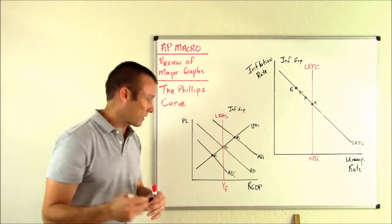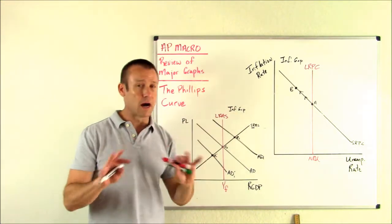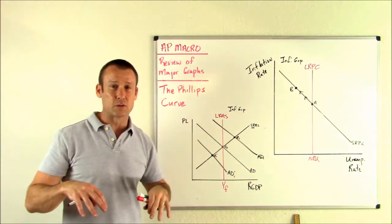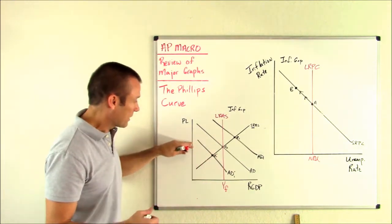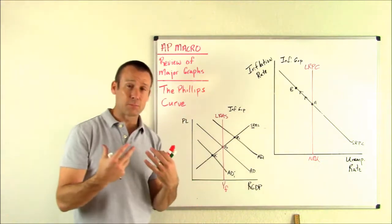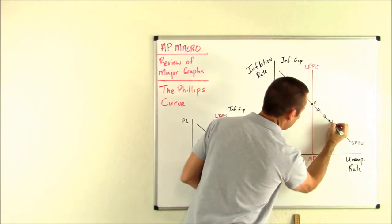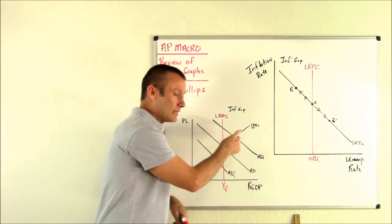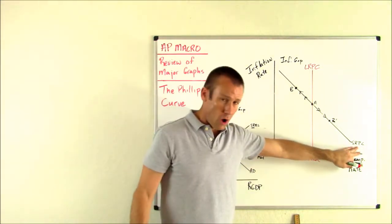Let's talk about the negative aggregate demand shock — AD shifting to the left. Price level goes down, inflation rate comes down, real GDP decreases, and the unemployment rate goes up. This is a movement along the SRPC to point B prime, corresponding to E-sub-one prime. That's our recessionary gap side — the right-hand side of the LRPC is the recessionary gap. The big takeaway: when AD shifts, we move along the SRPC.